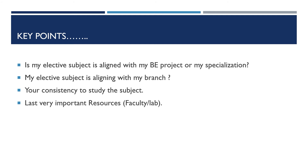The second key point is: is my elective subject aligned with my branch specialization? This is very important, especially if you are going for an MS degree, because universities will check your subjects and mark sheet. If you have not completed the required subjects for that specialization, you may have to spend three to six months completing those prerequisite subjects or earning credits — which is a wastage of time and money. So plan your career path in alignment with both your branch and your intended specialization.